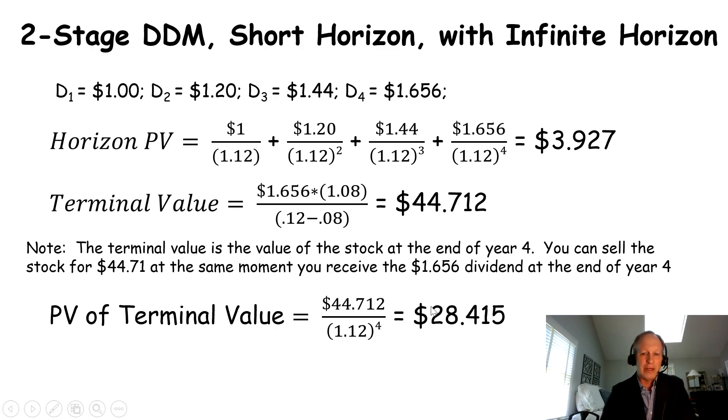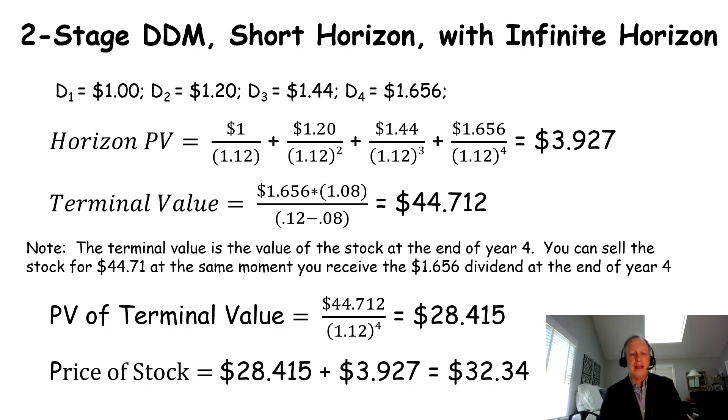So what I'm now going to do is add this amount, the present value of my terminal value, to the present value of my horizon cash flows. The sum of those two is my stock price. That's the price I'm willing to pay for today. I'm willing to pay $32.34. This is a more complicated problem. Sometimes, your professors will give you a few extra points on a problem like this. It's a more challenging problem.